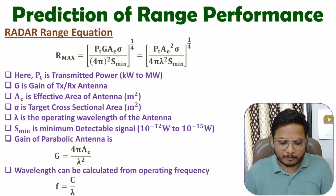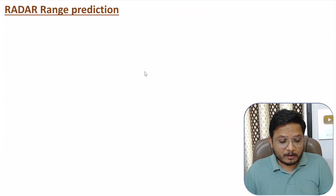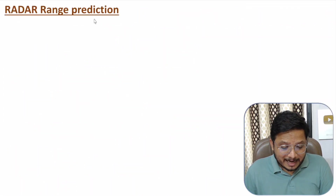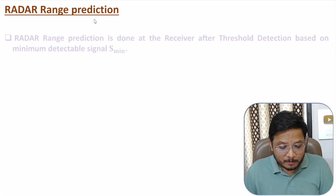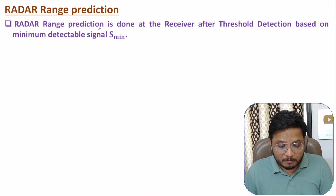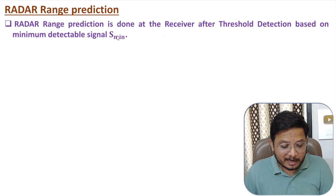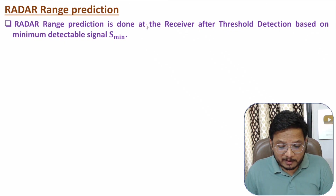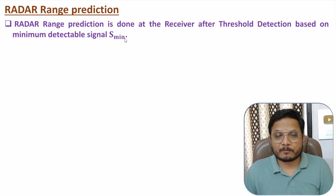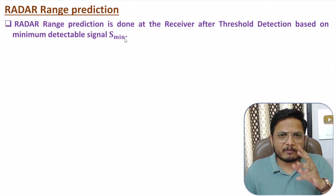Radar range prediction is done with the use of the receiver, where based on the minimum detectable signal we identify range prediction. To understand this, let me explain the concept of threshold voltage for prediction of range.